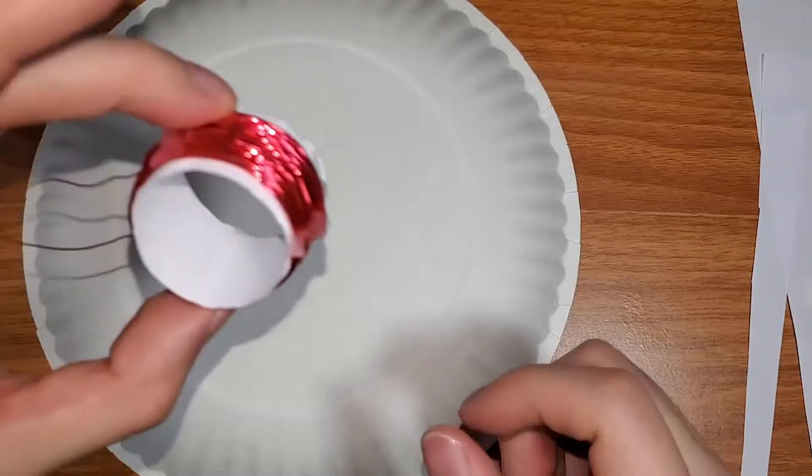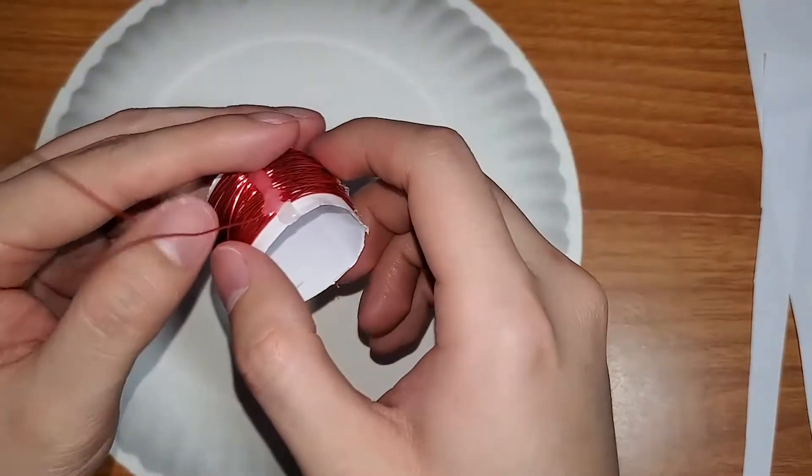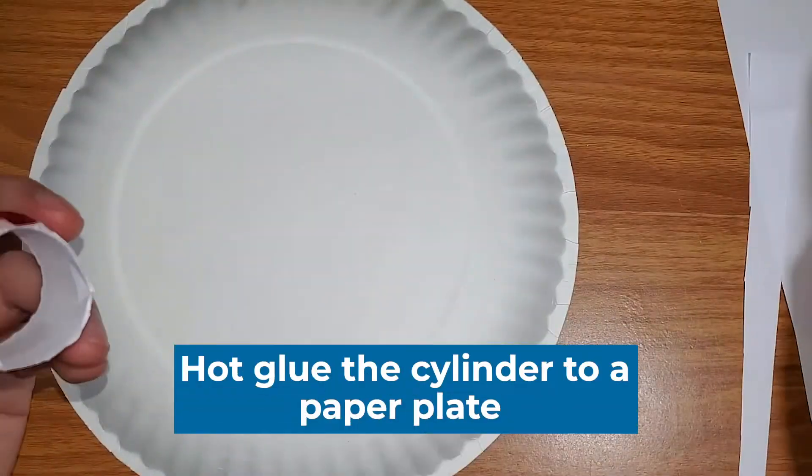Our next step now that we have this cut out cone or cylinder, what we need to do is to hot glue it onto our paper plate.